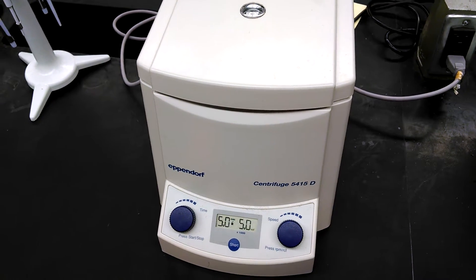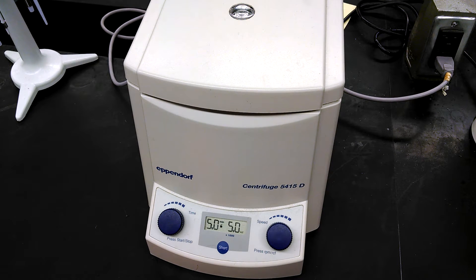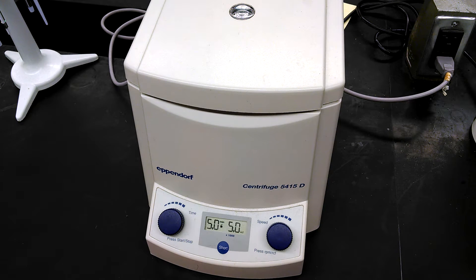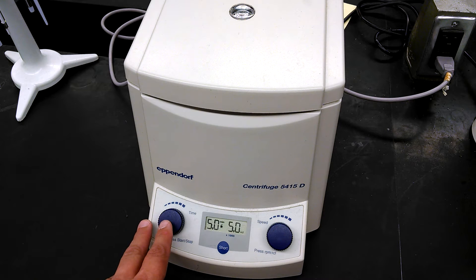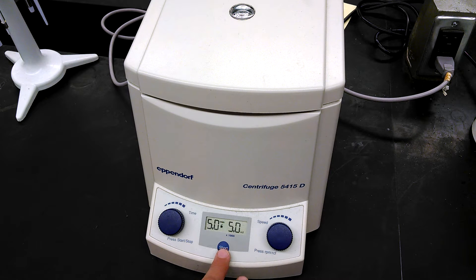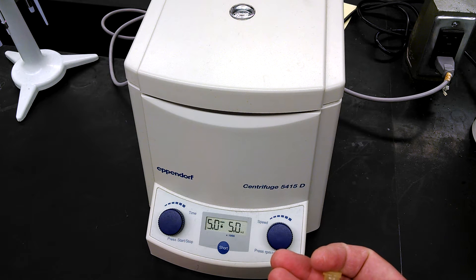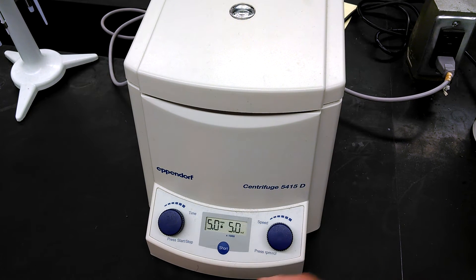When you're using a centrifuge, here's how you set the settings. It tells you to spin the samples for five minutes at 5,000 times gravity. And so our centrifuges all pretty much look the same. They have two knobs. One controls the time, and one controls the speed. They also have a third little button for very short spins. If you just hold this button right here down, it'll spin for as long as you hold it down, and it'll stop spinning when you release the button. So if you only want to spin it for five, ten seconds to pull liquid on the side of the tube down, you can pull it down using that button. It's very useful.